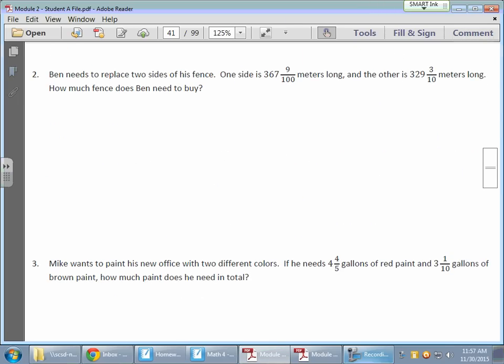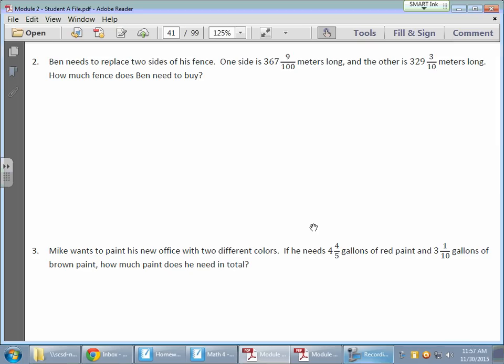So we have Ben. He needs to replace two sides of his fence. One side is 367 and 9/100 meters long, and the other side is 329 and 3/10 meters long. How much fence does he need to buy? So we're going to combine these two. So we have 367 and 9/100. There's one part, and he needs the 329. This one's a little smaller and 3/10. And I need this. So these are my addends, and this is going to be my sum.